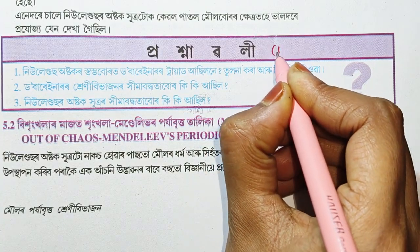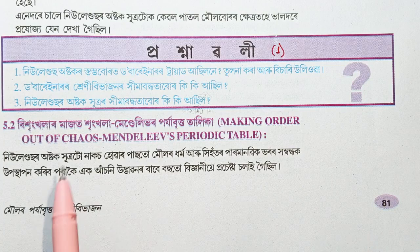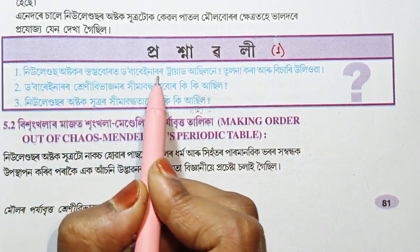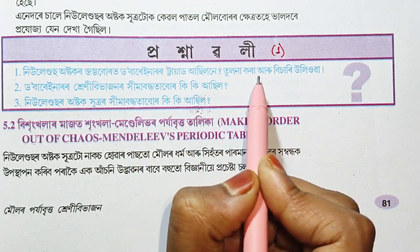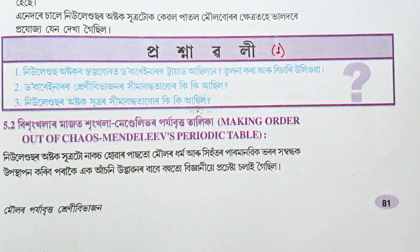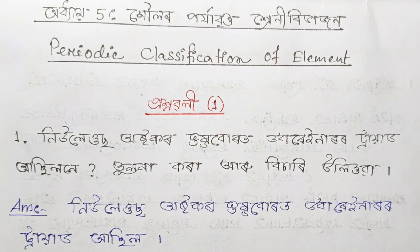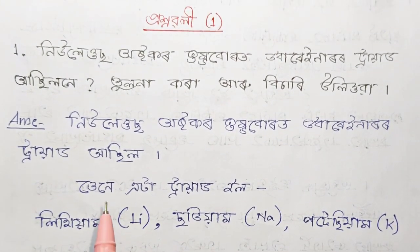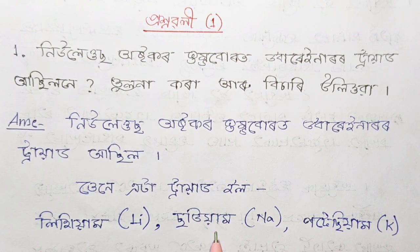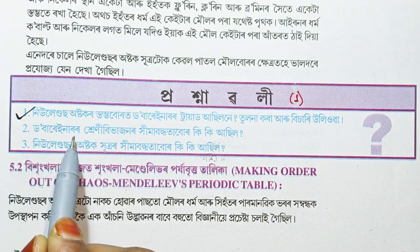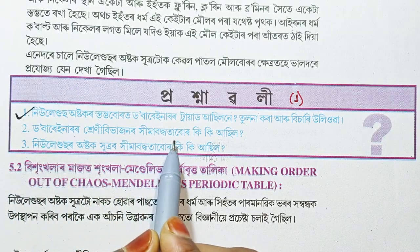I will ask question 1. The question is about Newlands and Mendeleev's triad. The first question is: the triad is lithium, sodium and potassium. What is the triad?